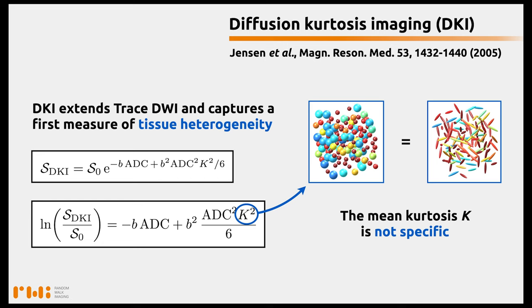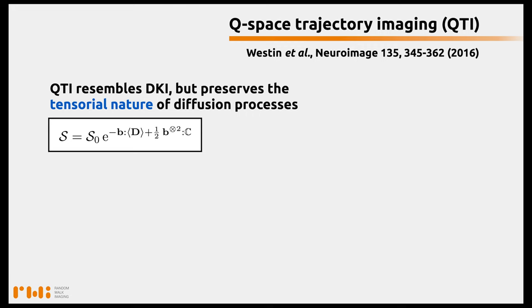The problem with DKI is that the mean kurtosis is not specific. You could have two different sources of heterogeneity that would contribute identically to the mean kurtosis. For instance, you could have a voxel content made of isotropic diffusion tensors with varying sizes — corresponding to varying cell densities — or a voxel content with an isotropic diffusion tensor corresponding to elongated, randomly oriented cells. In a way, Q-Space Trajectory Imaging, or QTI, is a generalization of DKI.